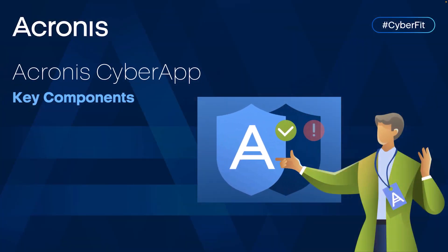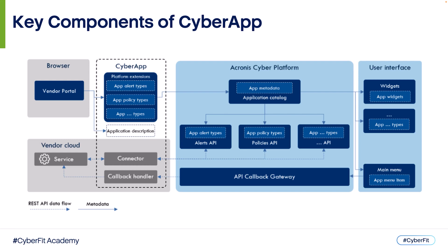Now let's take a look at the key components of the Cyber App. Cyber App typically consists of three key components. First, Vendor Portal — an application created and hosted by Acronis for ISVs to build Cyber Apps. Cyber Apps are created via the Vendor Portal, where the ISV manages and configures the application, including the configuration of extension points that the Cyber App wants to use, for example, new alerts, workload actions, main menu items, etc. Second, Vendor Cloud Components — components that ISVs have to build on their own cloud or infrastructure. The Connector is the component responsible for the data flow between the ISV service and Acronis Cyber Platform, receiving and sending data via the platform APIs.